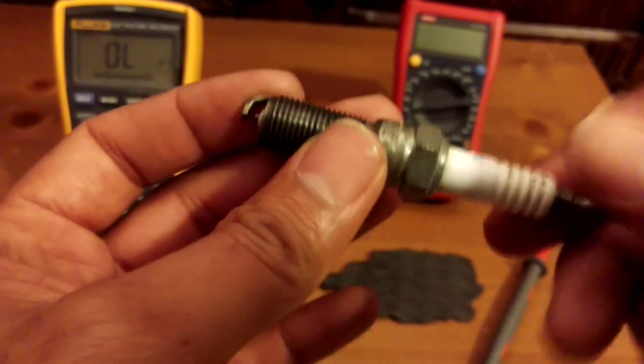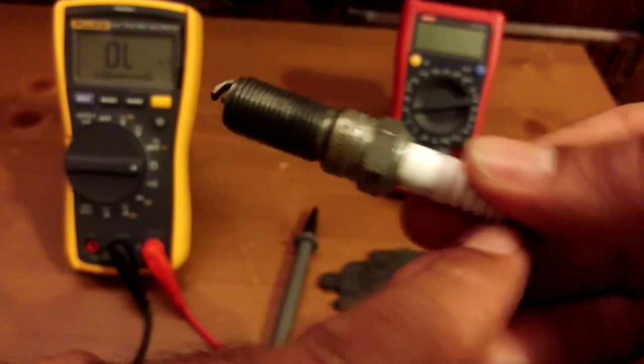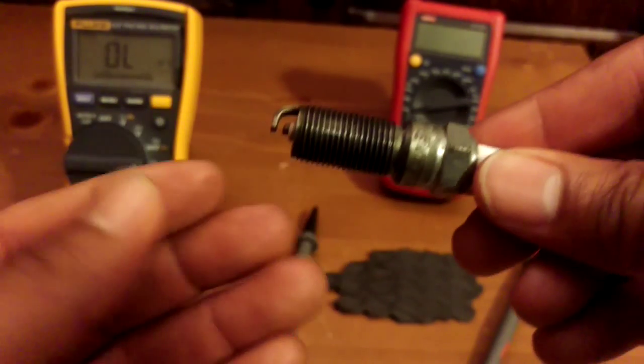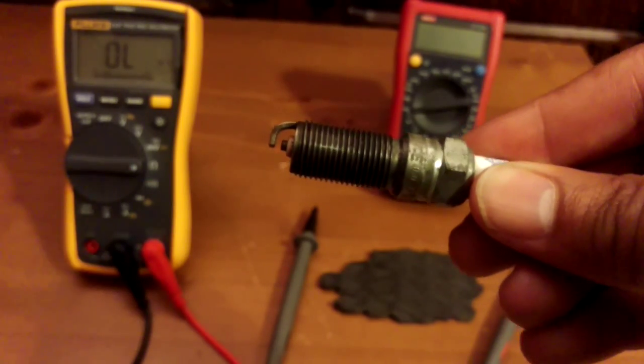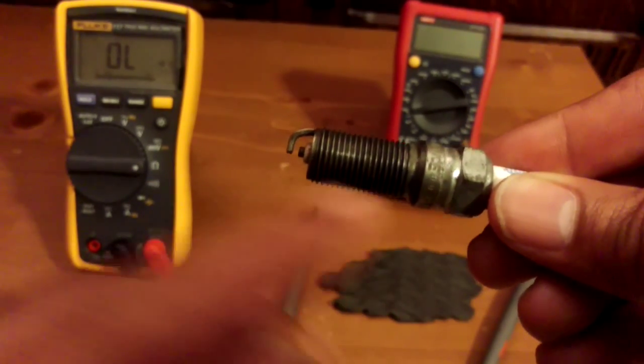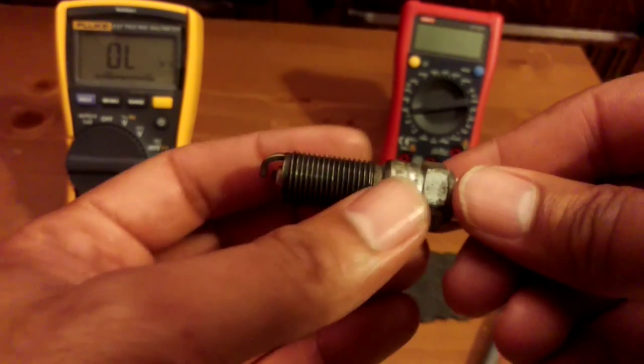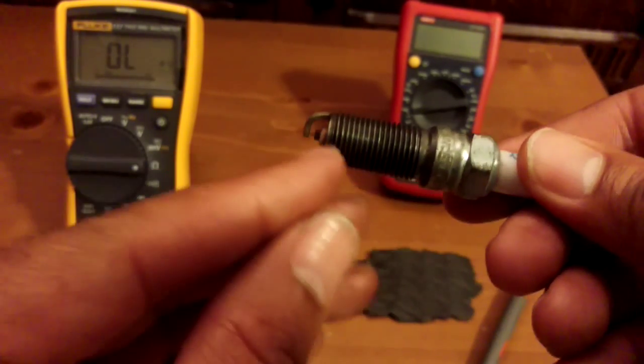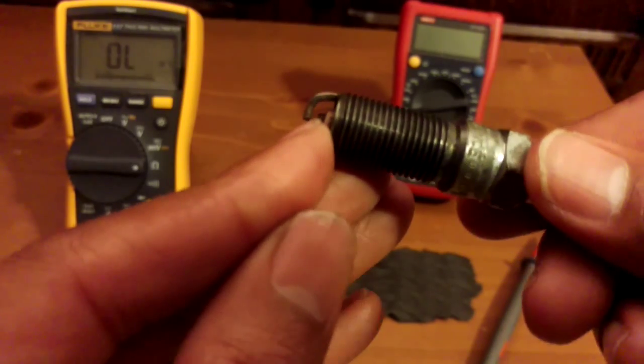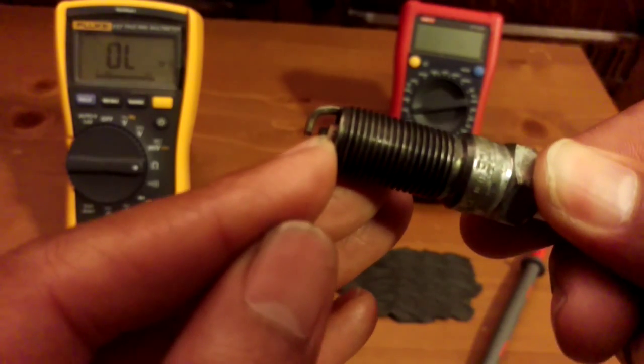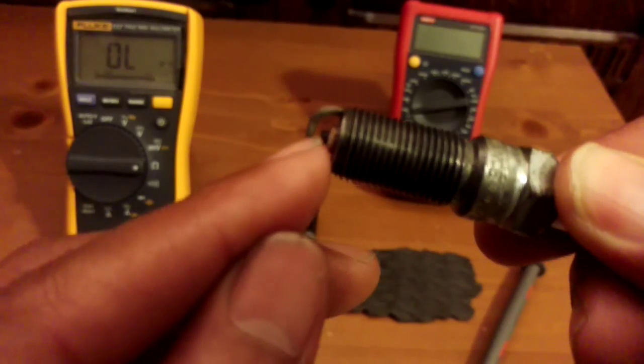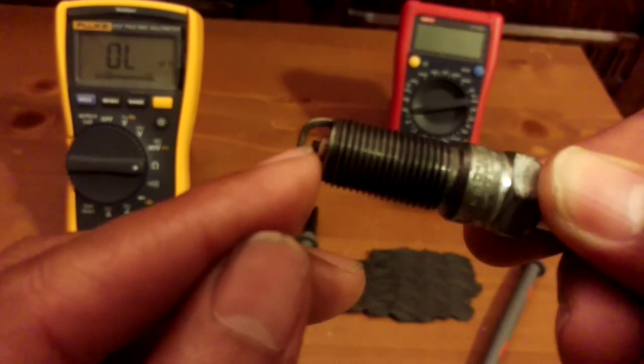If you imagine, the current, all it's wanting to do is get to ground, like a bolt of lightning wanting to get to earth. All it wants to do is get to ground and it'll do it in the easiest way possible. So the insulation is there to make sure that all the current only comes out there, and then when the current makes the leap to ground, it has to jump this gap here.